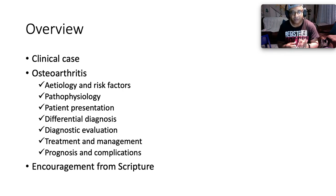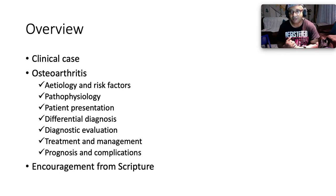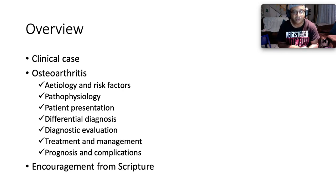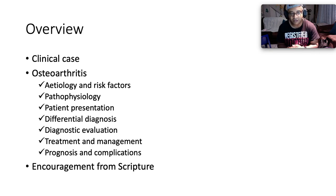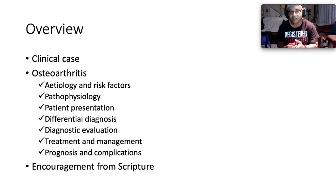Number one: etiology and risk factors. Number two: pathophysiology. Number three: patient presentation in the way of signs and symptoms. Number four: differential diagnosis. Number five: diagnostic evaluation in terms of investigations. Number six: treatment and management. Number seven: prognosis and complications.